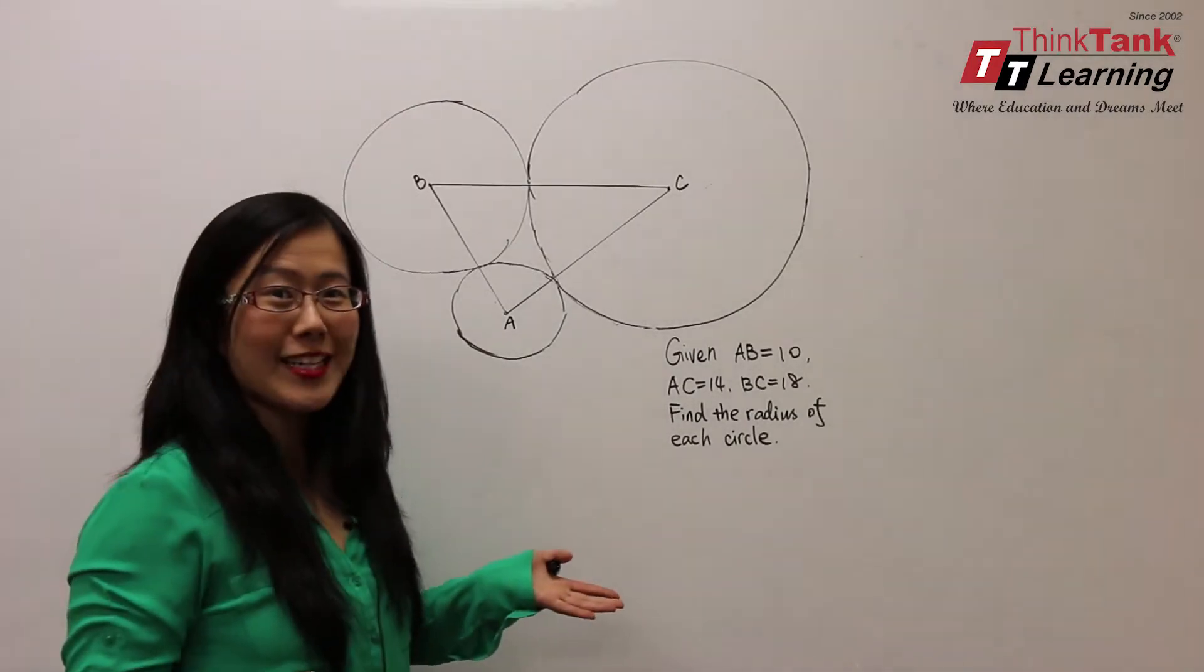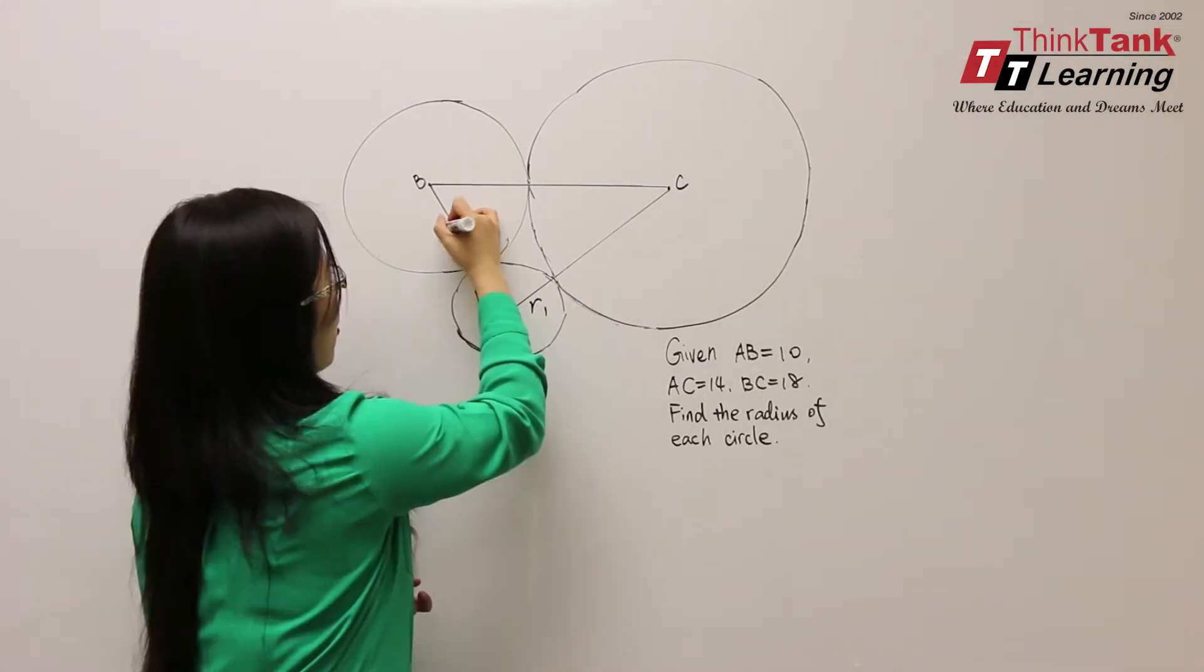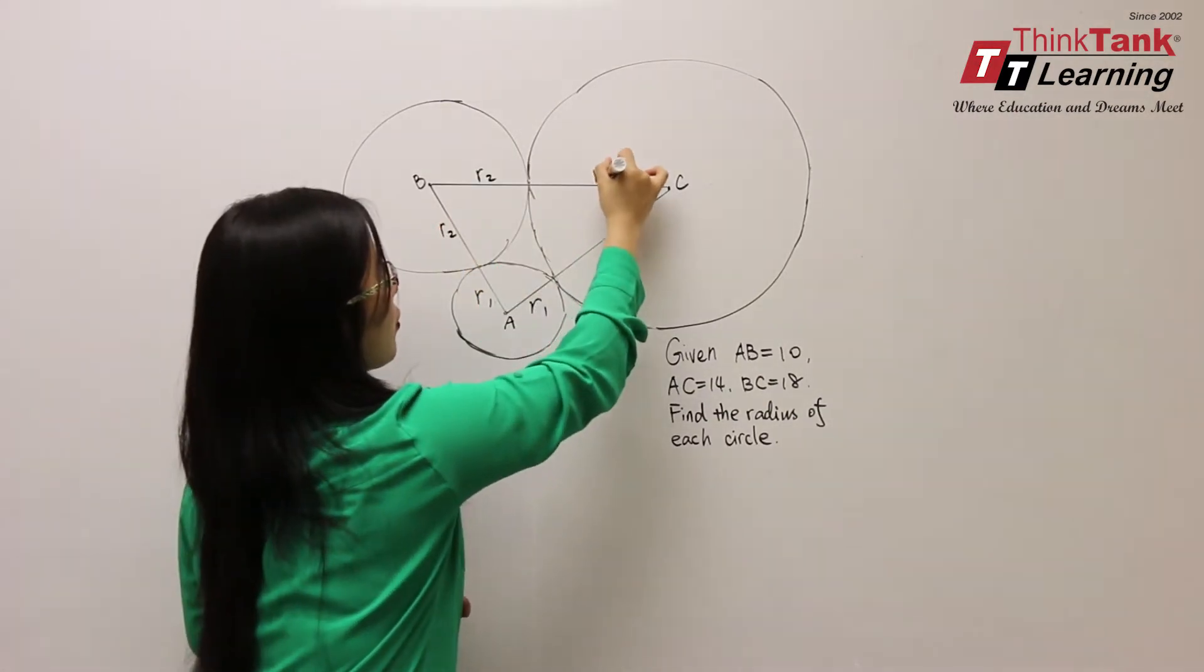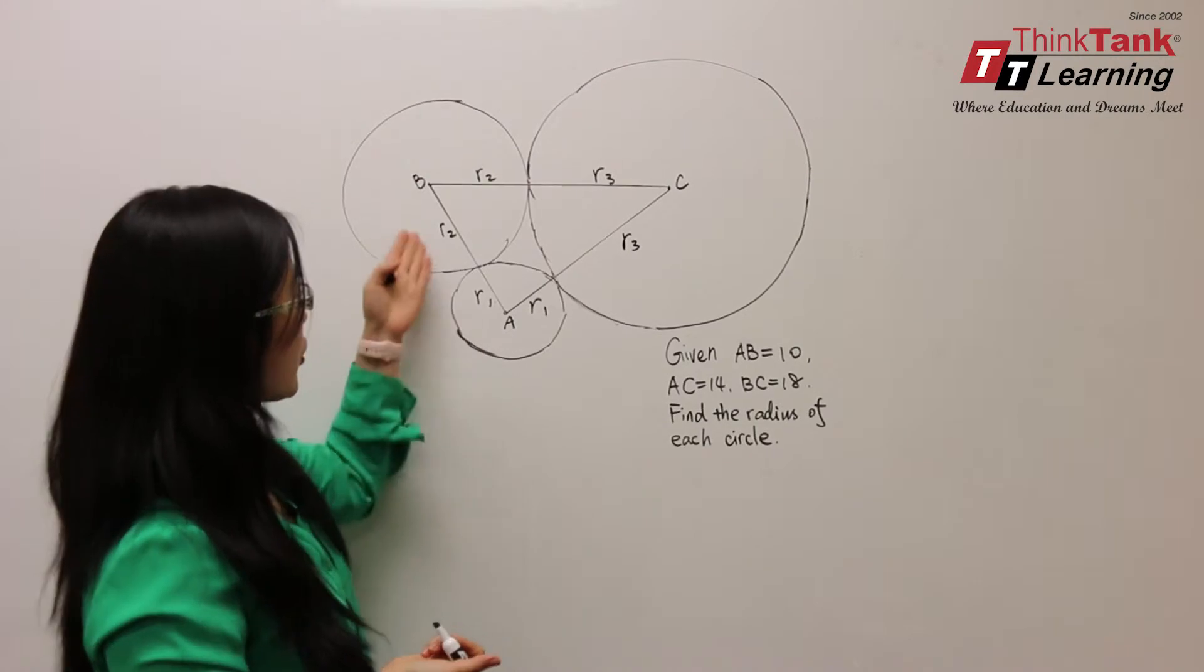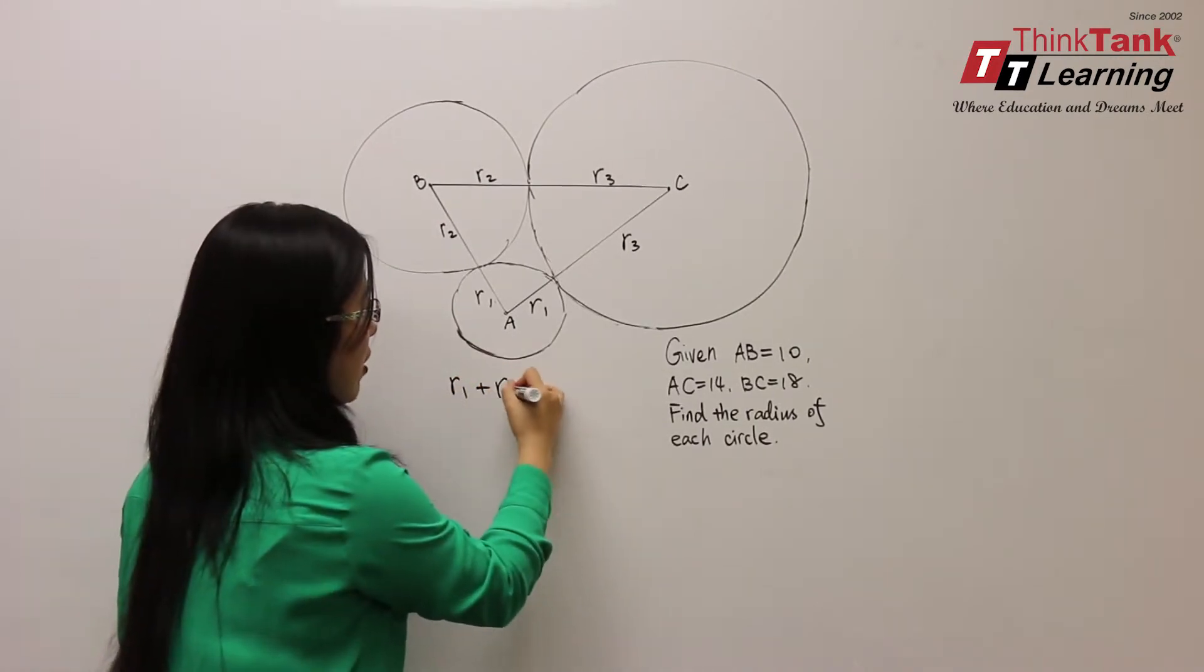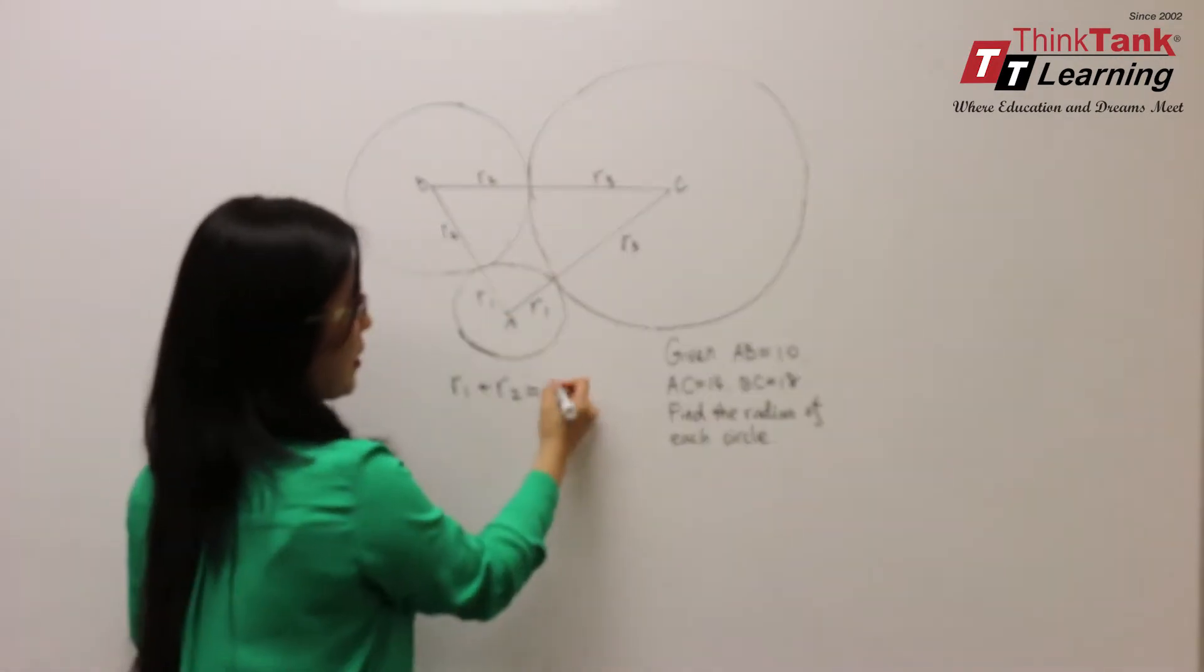We can assume the radius of the three circles to be R1, R2, and R3. So now we can set up the equation R1 plus R2 equals AB, which is 10.